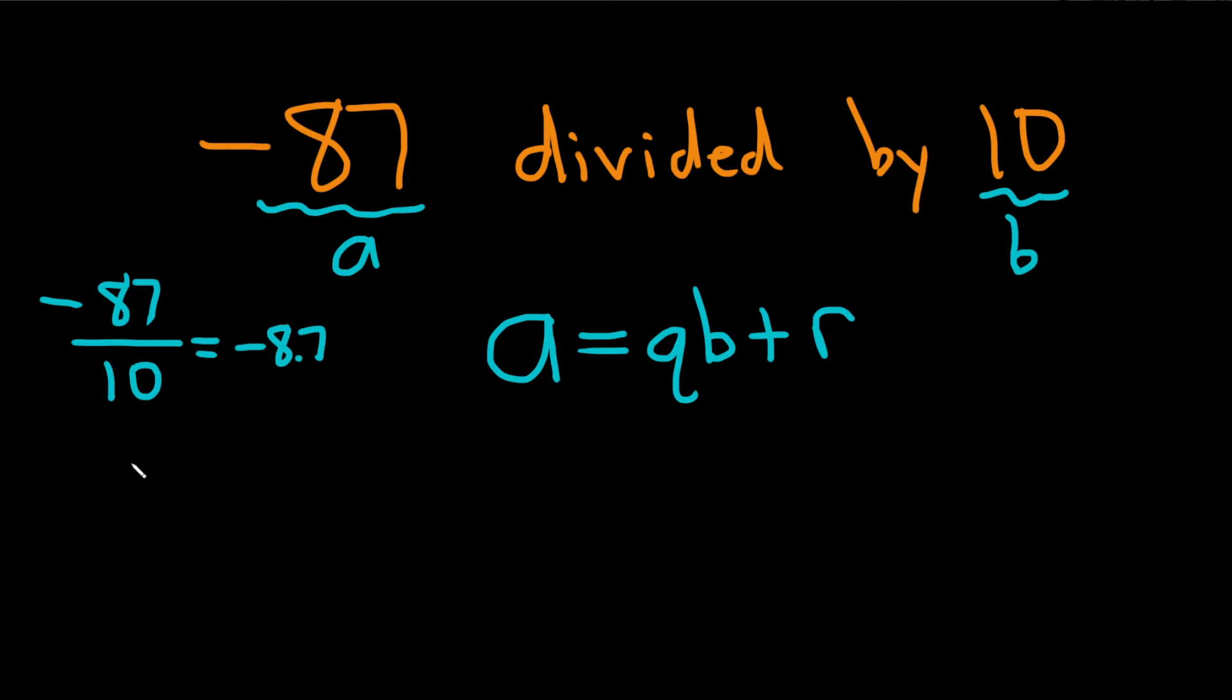Now here's the key: you want to round down. If you get a whole number, you're done and the number you get is the quotient and the remainder is zero. If you get a decimal, you always want to round down. Because this is negative 8.7, when you round down you actually get negative 9, and that's going to be our quotient.